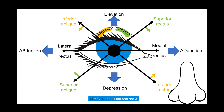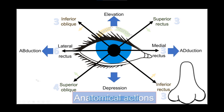A simple formula for remembering the nerves that innervate the extraocular muscles is LR6SO4: the lateral rectus is supplied by the sixth cranial nerve (the abducens nerve), the superior oblique is supplied by the fourth cranial nerve (the trochlear nerve), and all remaining muscles — including the levator palpebrae superioris — are supplied by the third cranial nerve, the oculomotor nerve.